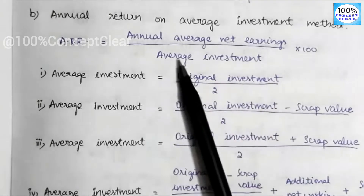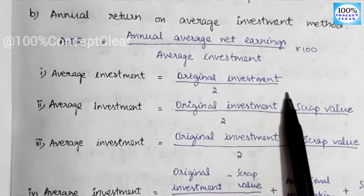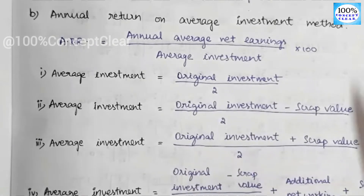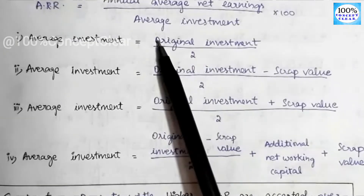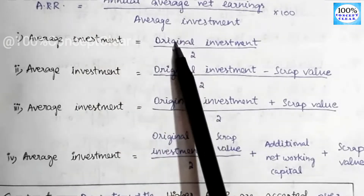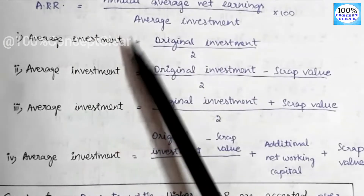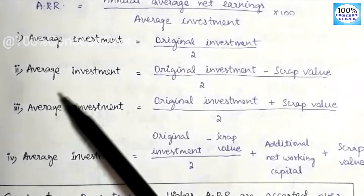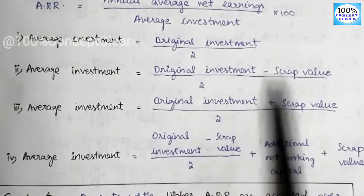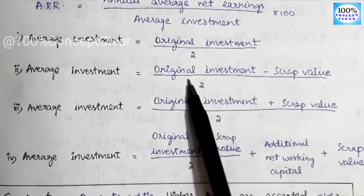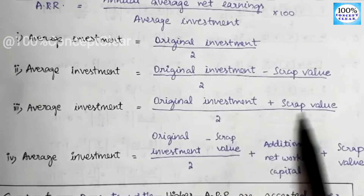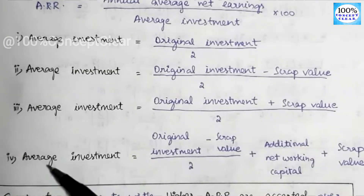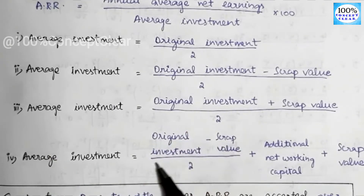If we use the average investment formula, the answer will vary depending on which formula is applied — each of the four formulas gives a different answer. The four formulas are: First, average investment equals usual investment divided by 2. Second, average investment equals usual investment minus scrap value, divided by 2. Third, average investment equals usual investment plus scrap value, divided by 2. Fourth, average investment equals usual investment minus scrap value, divided by 2, plus additional working capital, plus scrap value.